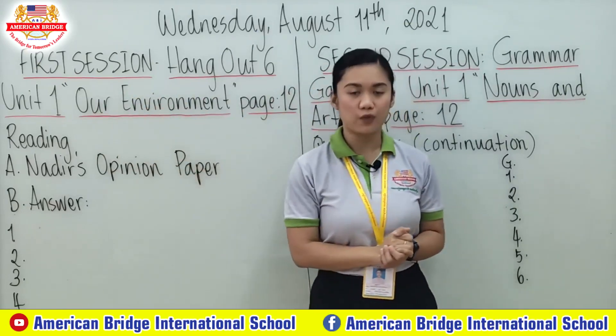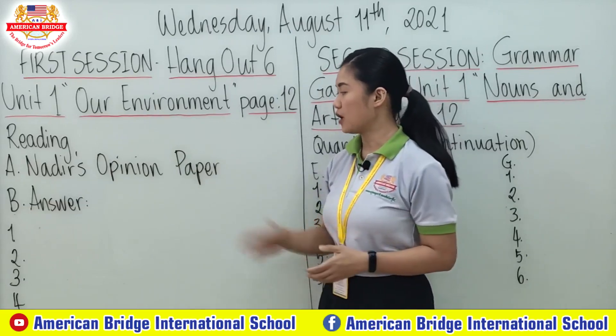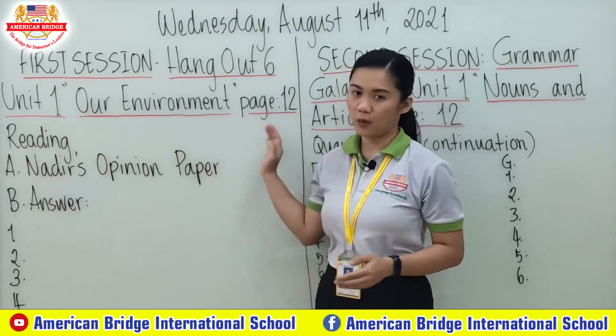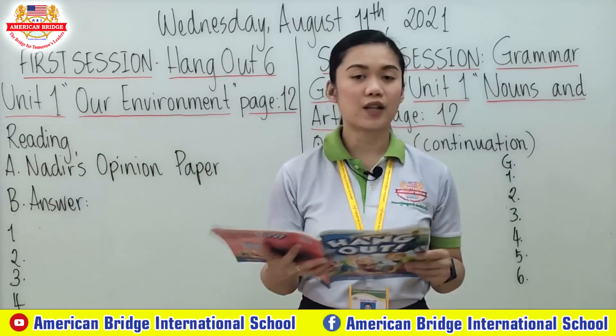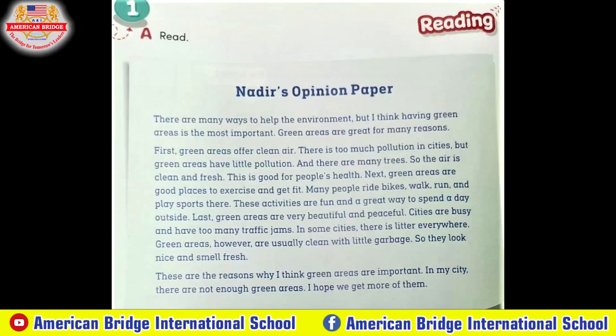We are going to read Nadir's Opinion Paper on page 12. So let's read all together. Part A, Nadir's Opinion Paper. There are many ways to help the environment, but I think having green areas is the most important. Green areas are great for many reasons.